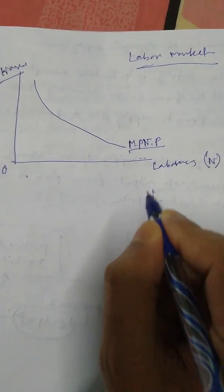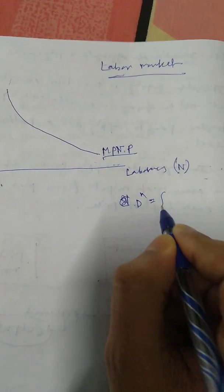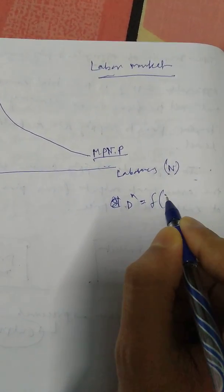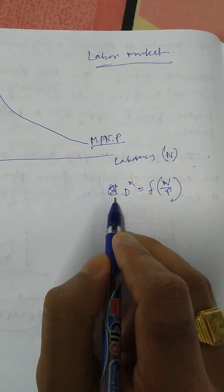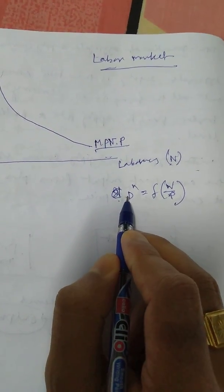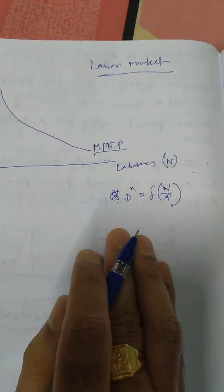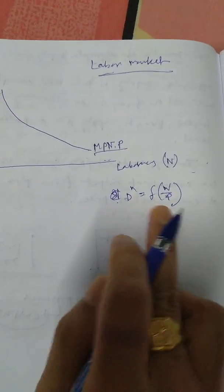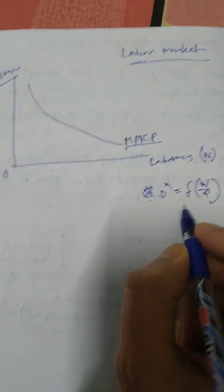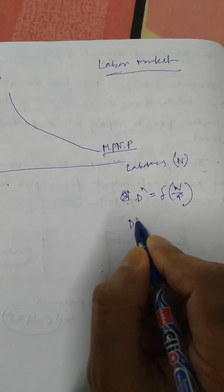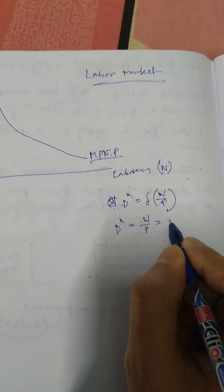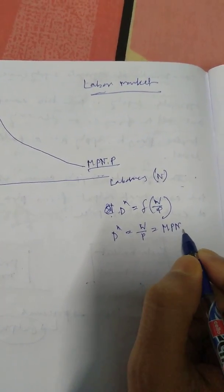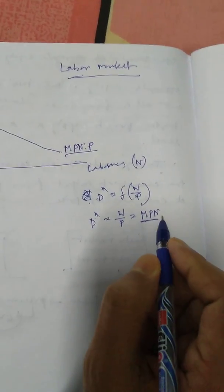The demand for labor is a function of the real wage. If real wage is more, demand for labor will fall; if real wage is less, demand for labor will increase. There is an inverse relationship between the two. Equilibrium employment of labor takes place where W/P is equal to the marginal productivity of labor (MPN).